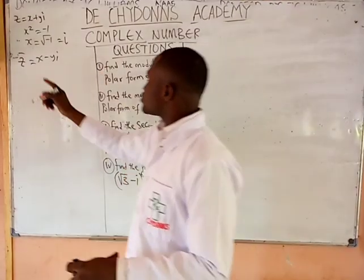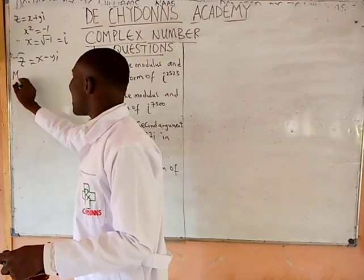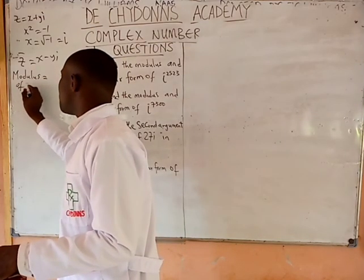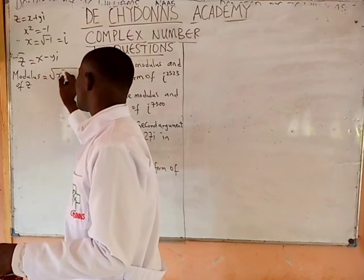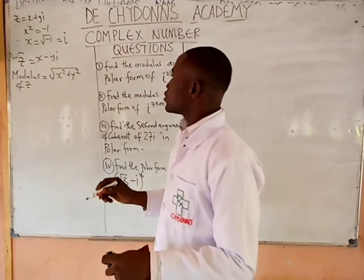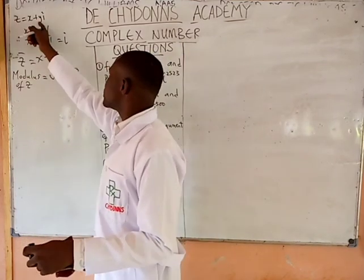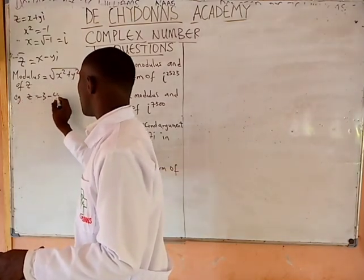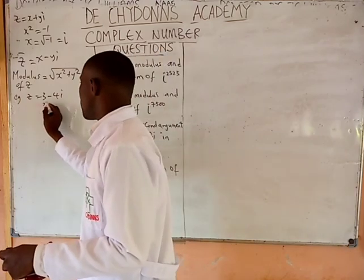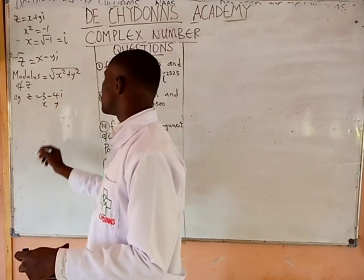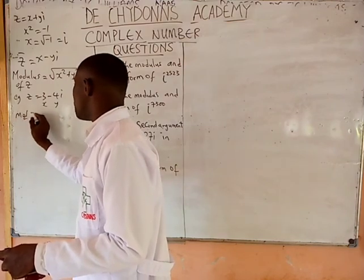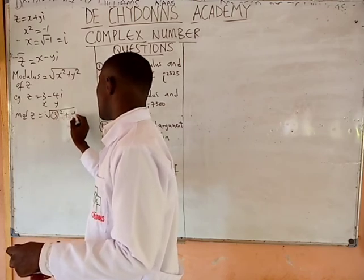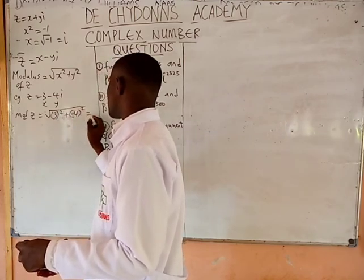Now, this complex number has a modulus. The modulus of a complex number is equal to the square root of x squared plus y squared. For example, given that z equals 3 minus 4i, the 3 will be your x and minus 4 will be your y. The modulus of the complex number will be equal to the square root of 3 squared plus minus 4 squared, and that will give you 5.